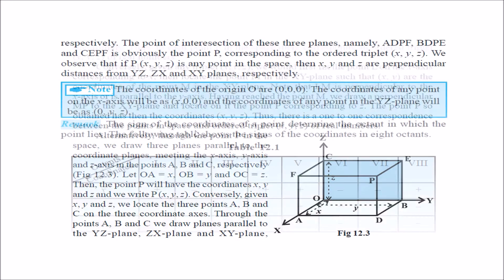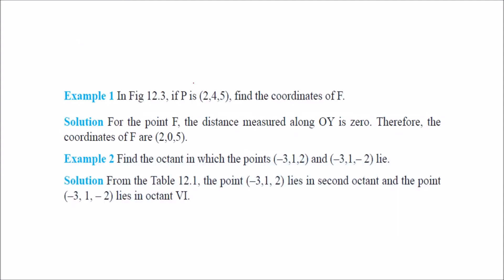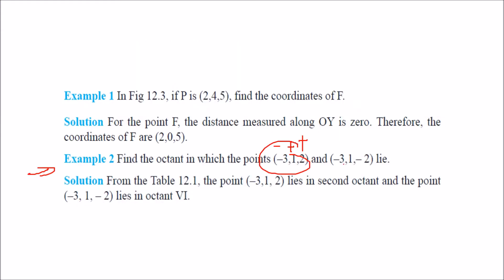Now, you have seen 8 rooms because of the coordinate axes — these are defined by signs. For each octant, you have different signs. For example, if the sign is minus, plus, plus — as in the point (-3, 1, 2) — then in which octant does it lie? Minus, plus, plus corresponds to the second octant.